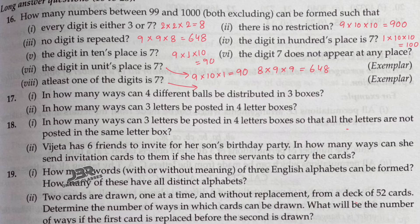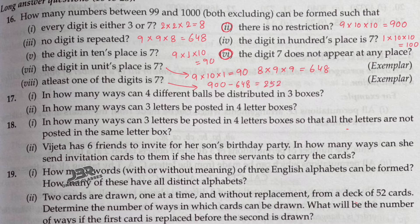Sum number 8: At least one of the digits is 7. For the solution, use sum number 2 — no restriction, repetition allowed, total numbers = 900. Then subtract sum number 6 where digit 7 does not appear at any place, which gave 648. So 900 − 648 = 252 is your answer.